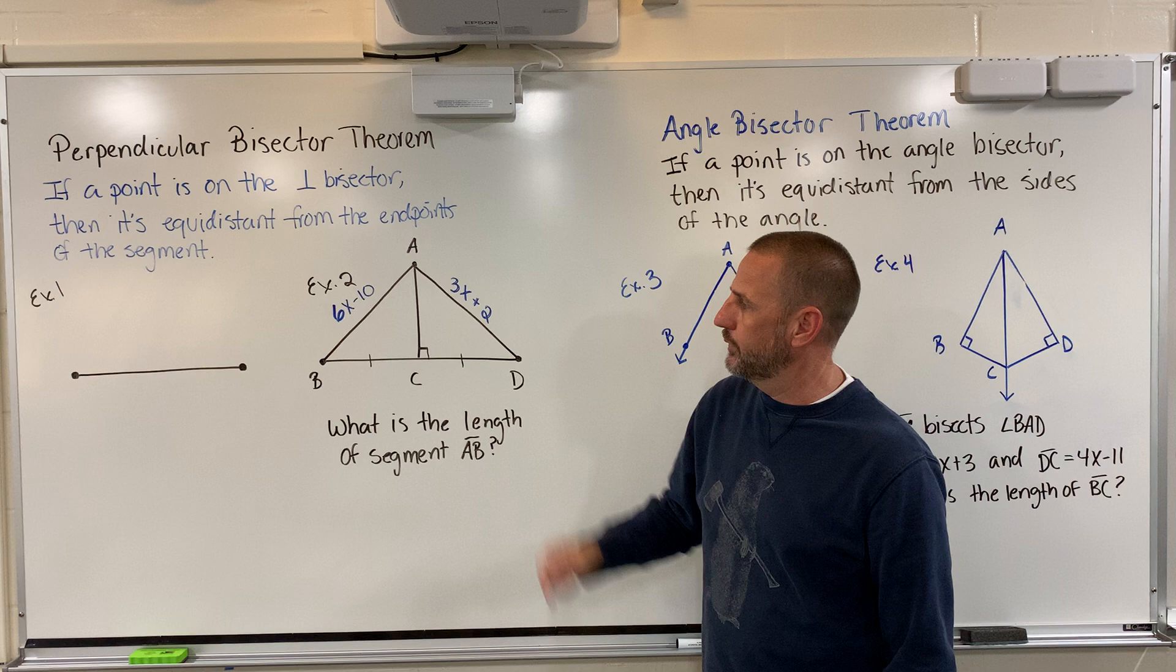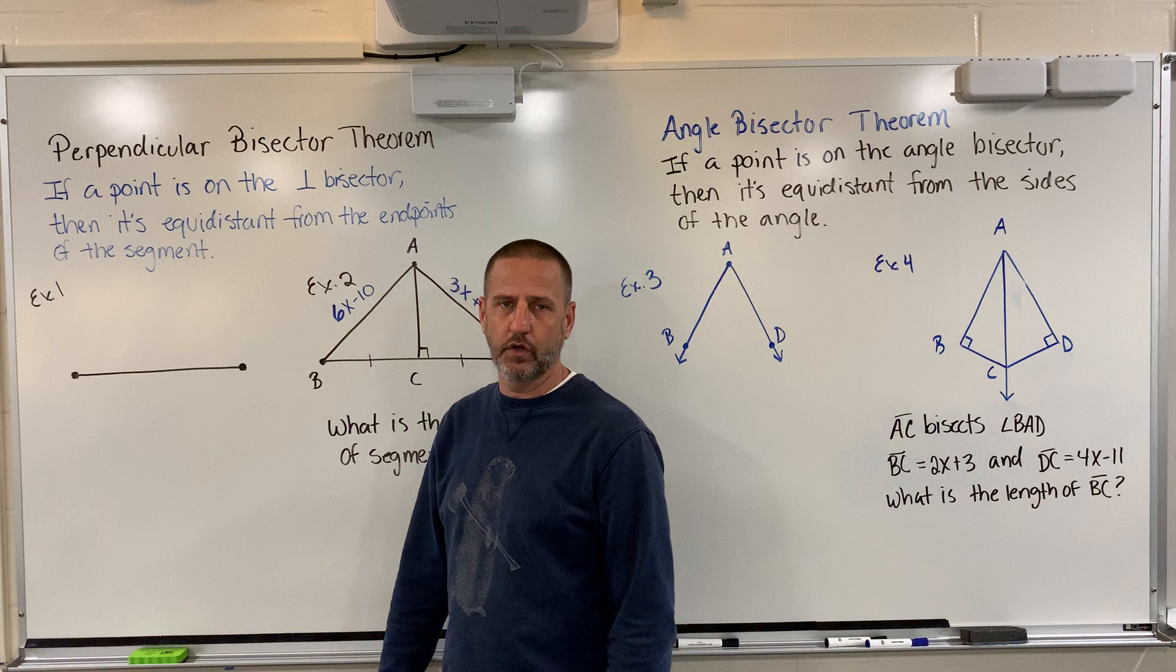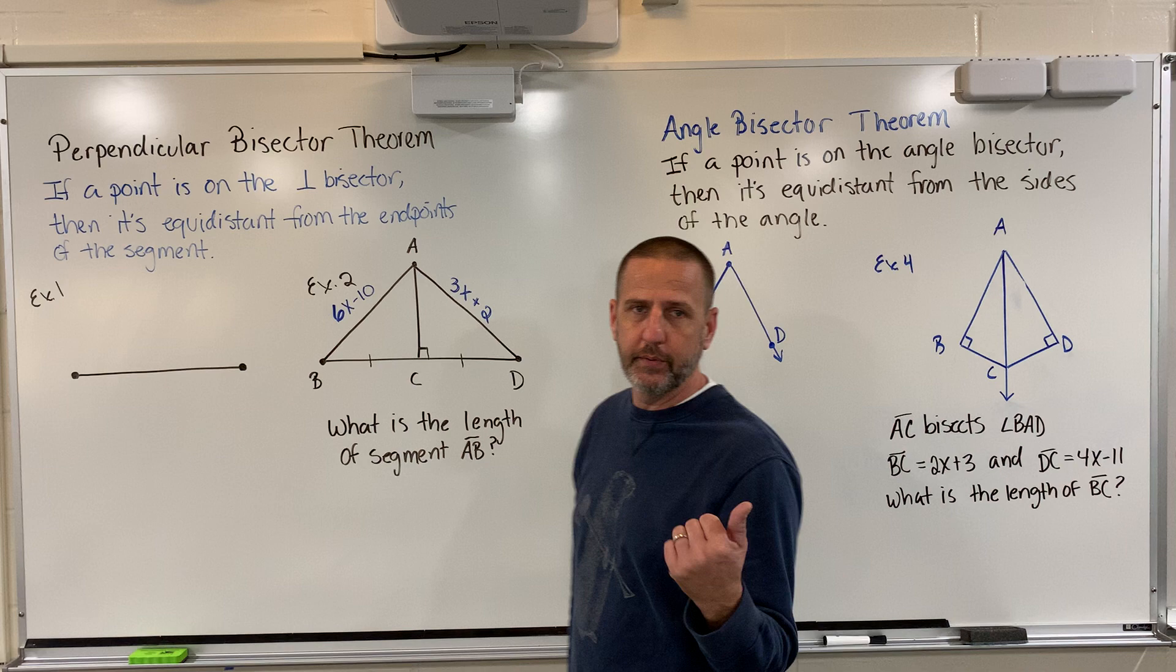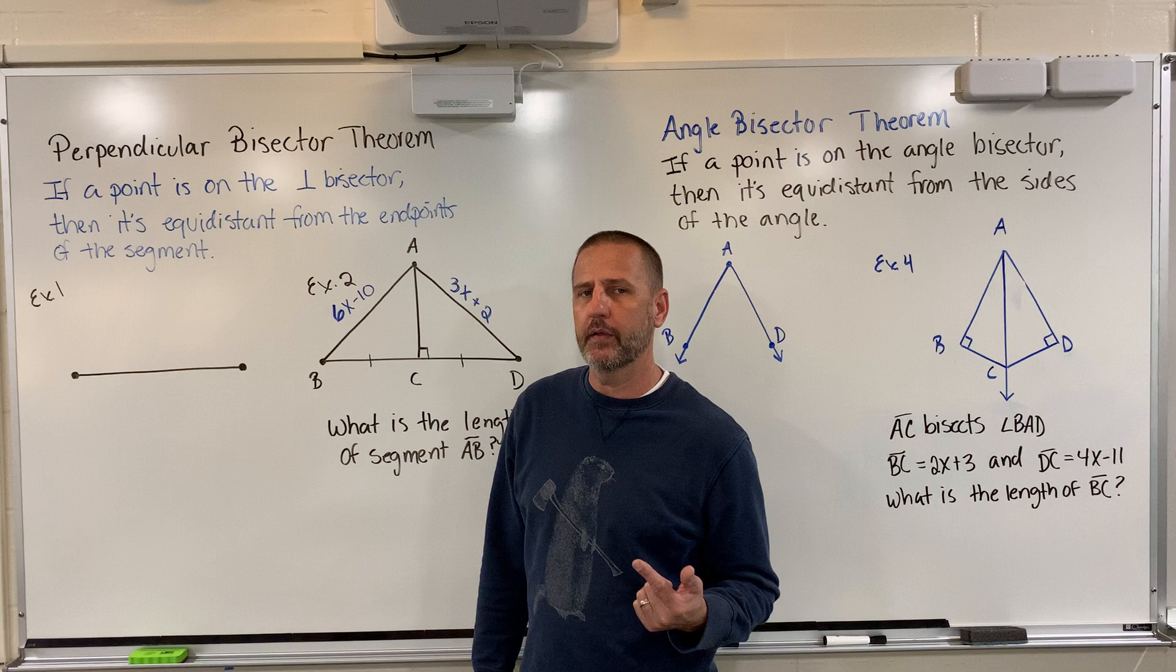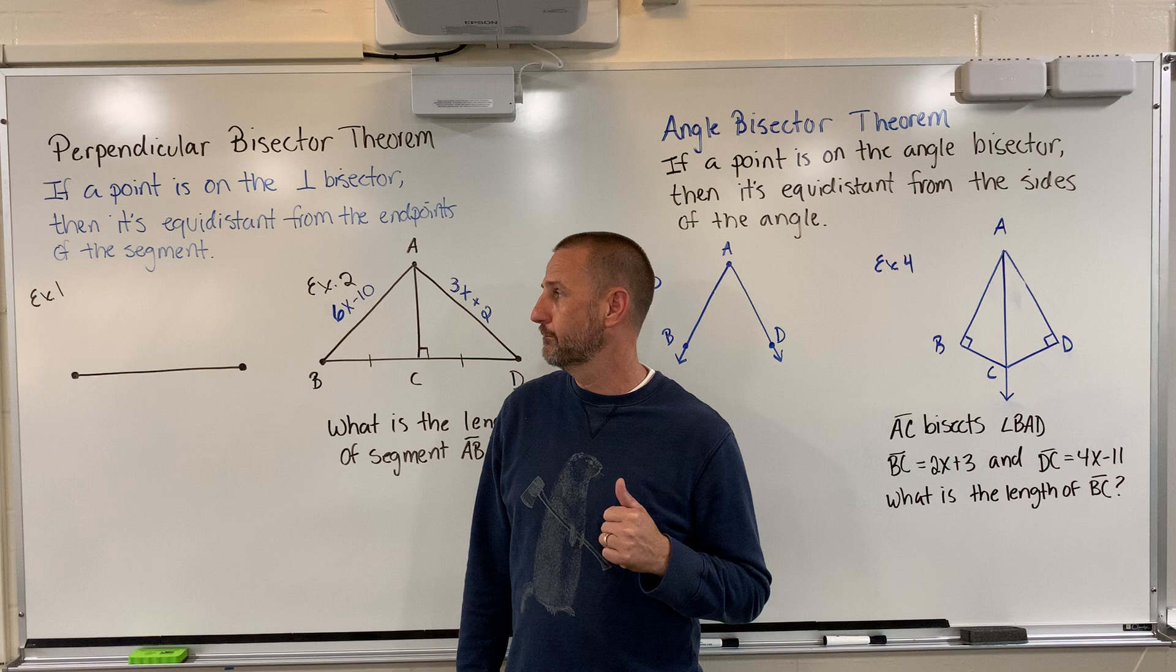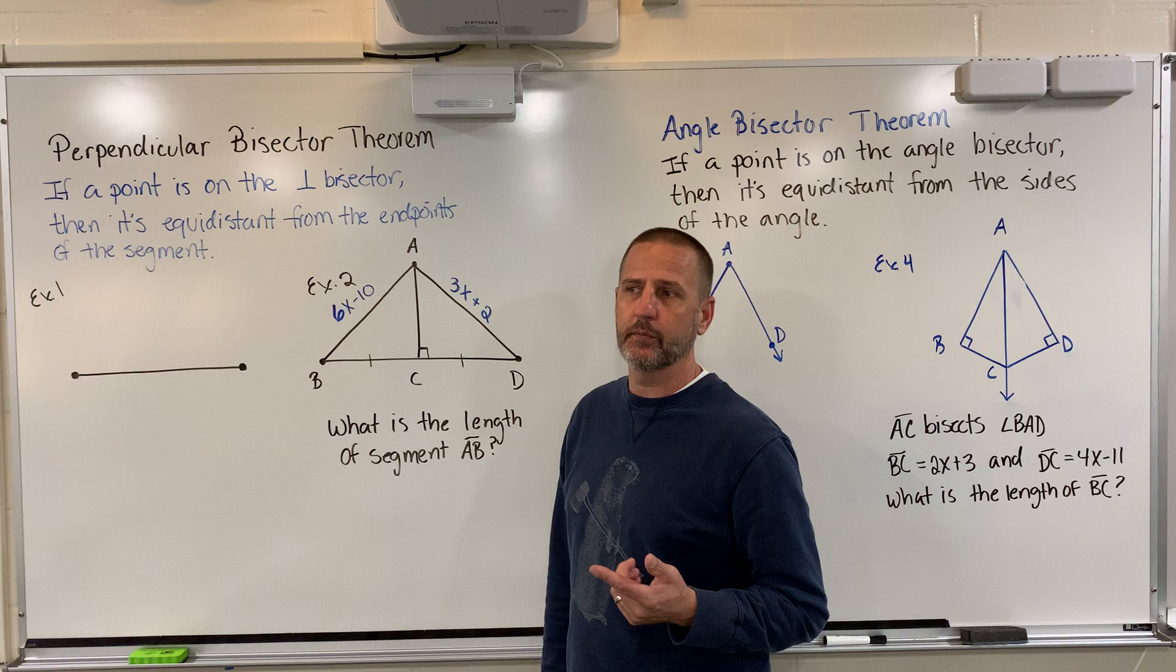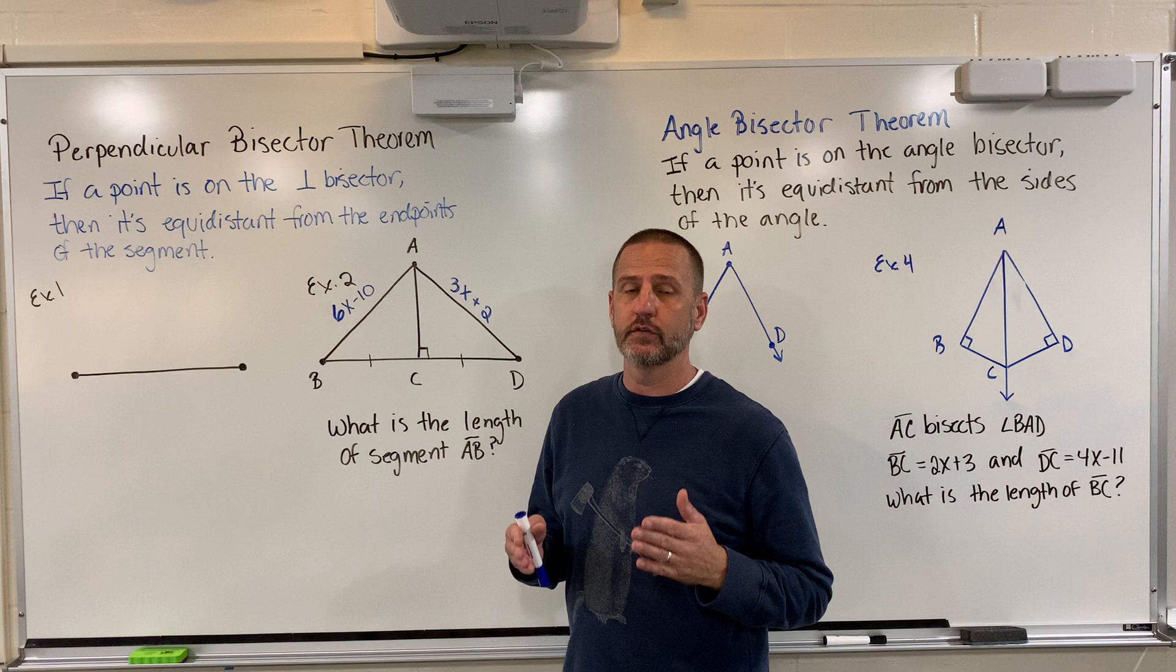We're going to start off with a line segment here for number one. I'm just going to show you what a perpendicular bisector is. We have two words that we need to look at, perpendicular, which we've looked at before. When we talk about things being perpendicular, we're talking about lines that intersect to form right angles. The bisector means that we're going to put that right angle at the midpoint, the point that cuts the segment into two equal portions.